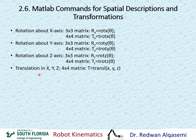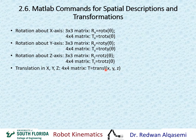If you'd like to have a translation in x, y, and z represented by a 4x4 transformation matrix, then you can use the command transl — t-r-a-n-s-l. Inside this, there are three arguments which are the values of x, y, and z. That gives you a 4x4 transformation matrix with values for translation but an identity matrix in the rotation portion.